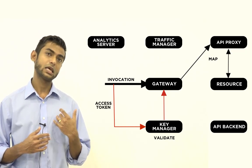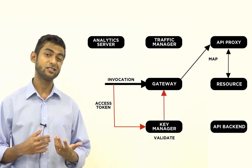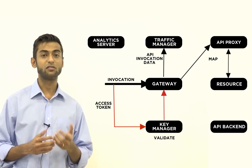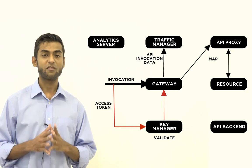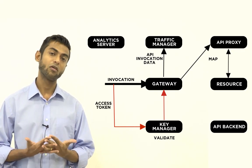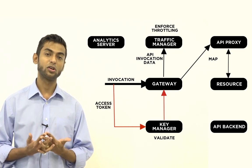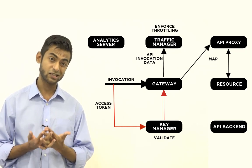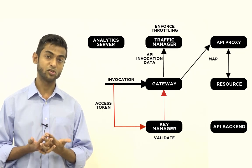So provided that the API call is deemed to be valid, the next thing that the API Gateway does is it will publish API invocation data to the traffic manager. So the traffic manager is responsible for enforcing throttling policies for the API proxies that are created by WSO2 API Manager.